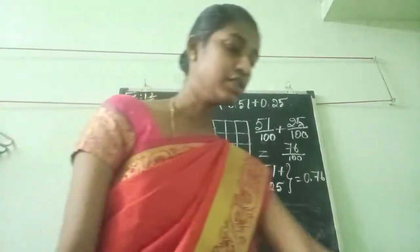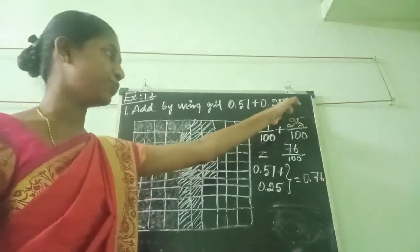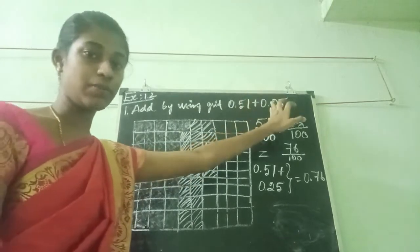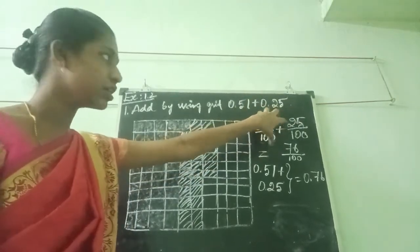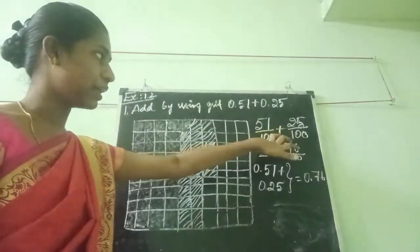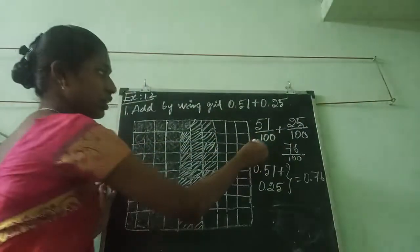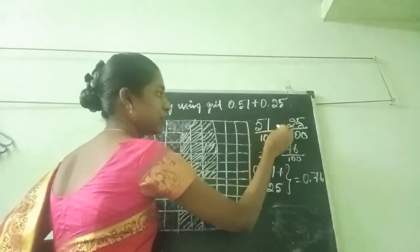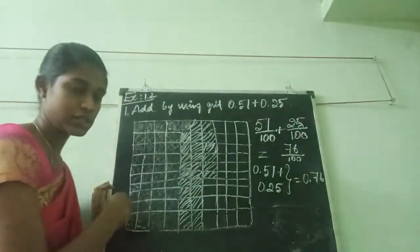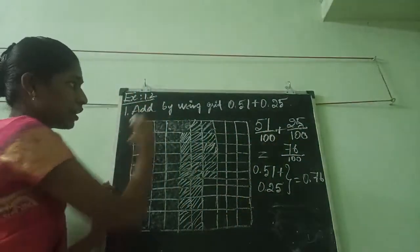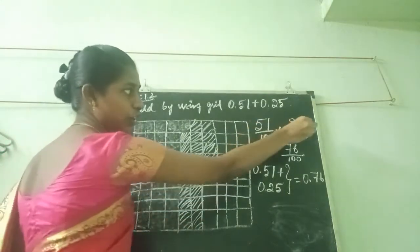The question is 0.51 plus 0.25. They are given in decimal point. I am taking in fractional method. That is 51 divided by 100 plus 25 divided by 100. Since the denominator is same, we want to take 100 boxes. I am putting 100 boxes and I am shading 51 and 25.